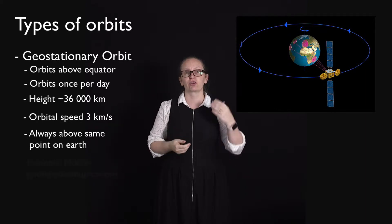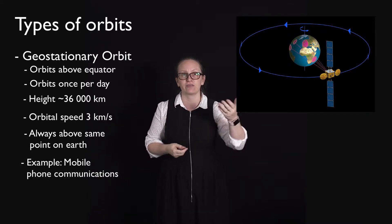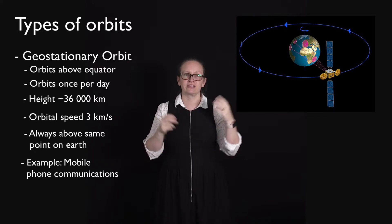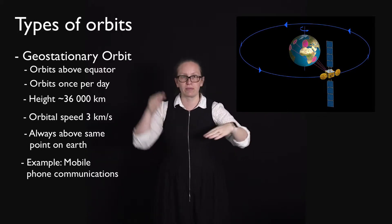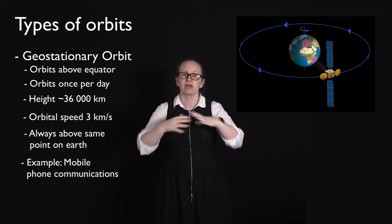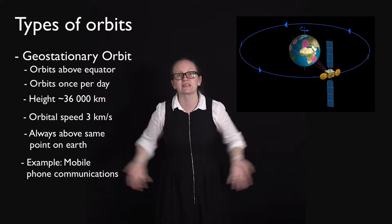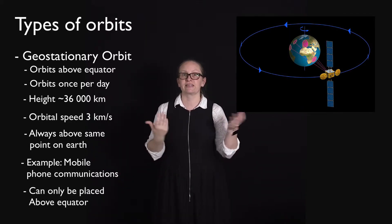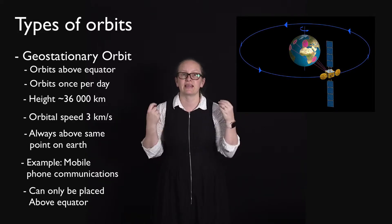This can be used for communications satellites, for example, where you want to have signals beamed from mobile phones and then beamed back down to the earth within the same radius all the time. The limitation is that this only can happen at the equator.